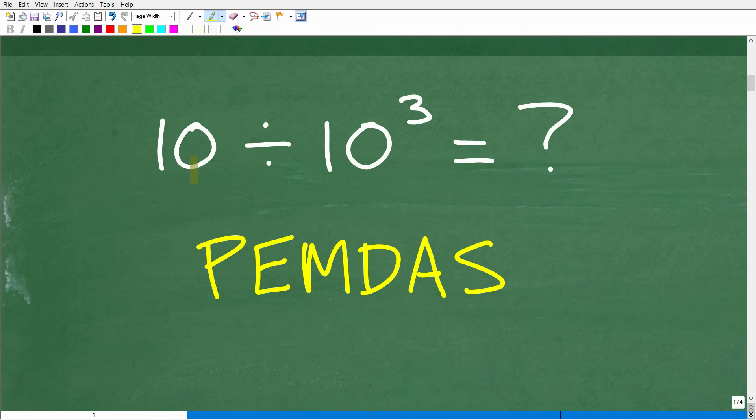Or you could have said, before I do the division, I'll take 10 and then cube it, get that answer, and then take 10 divided by the result. That's the correct approach. But why? Well, it's because this lovely saying right here: PEMDAS.